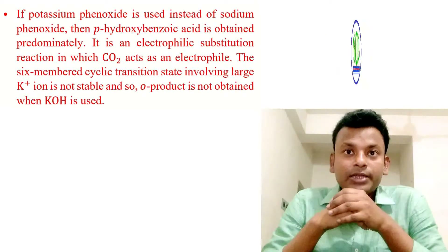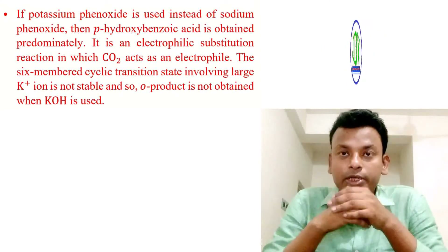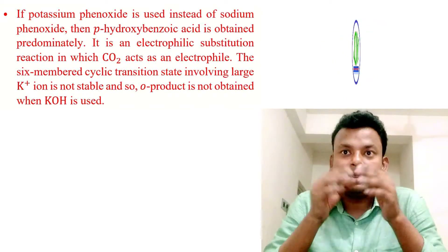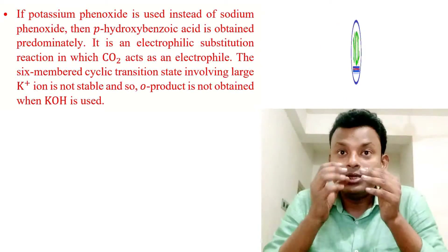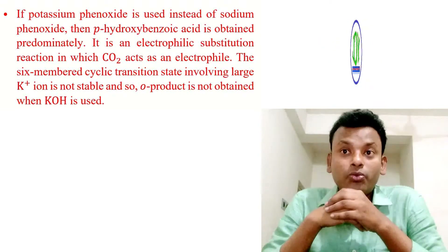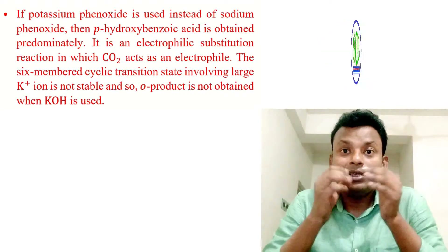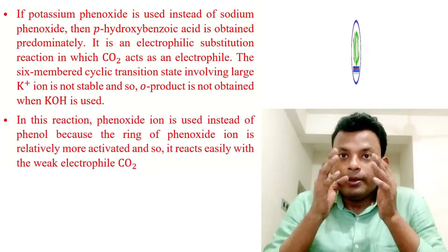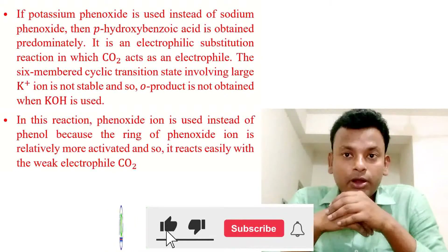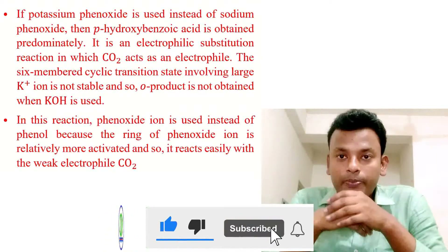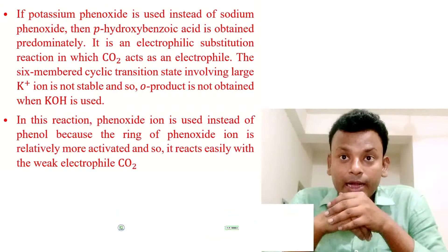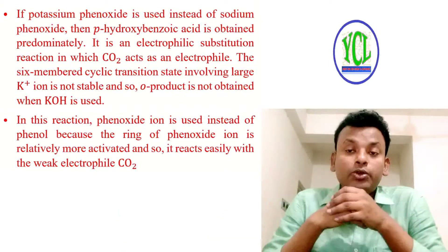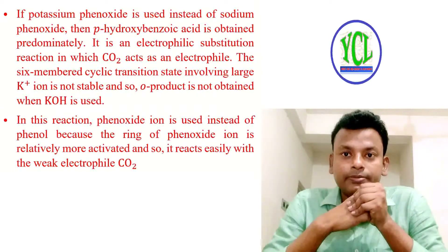It is an electrophilic substitution reaction in which carbon dioxide acts as an electrophile. The six-membered cyclic transition state involves the large potassium ion, which is not stable, so the ortho product is not obtained when KOH is used. In this reaction, phenoxide ion is used instead of phenol because the ring of phenoxide ion is relatively more activated and so it reacts more easily with the weak electrophile carbon dioxide.